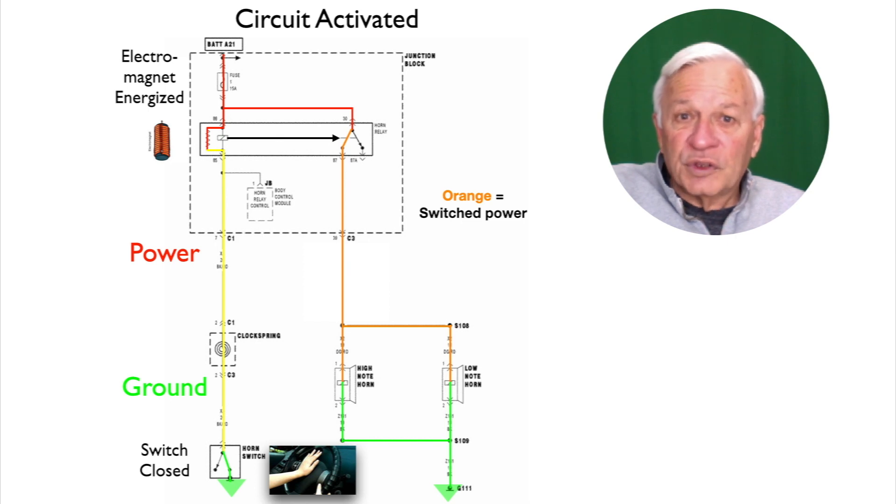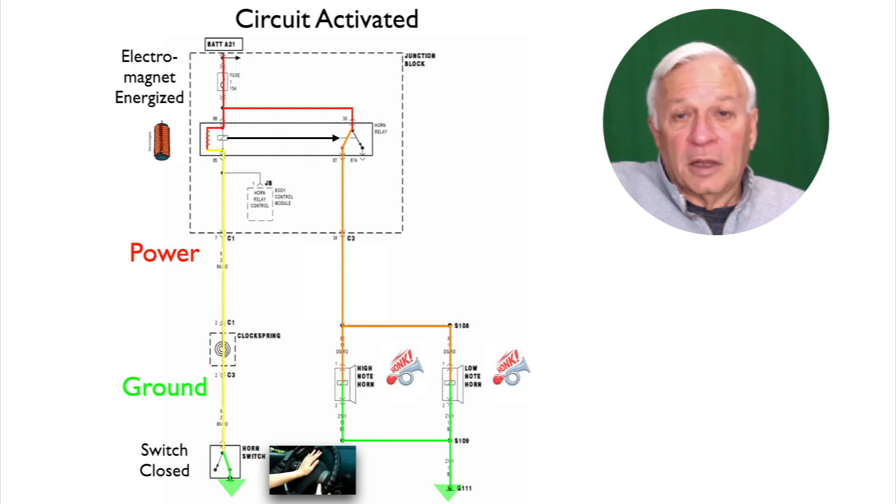The electromagnetic force from the coil pulls the contacts closed and that allows current to flow to the horns. Orange indicates that it is switched power or current and the horns blow.